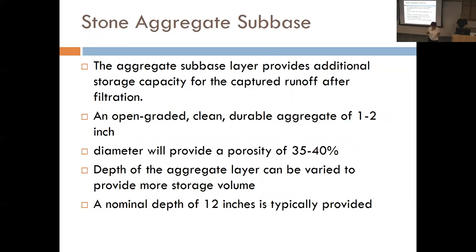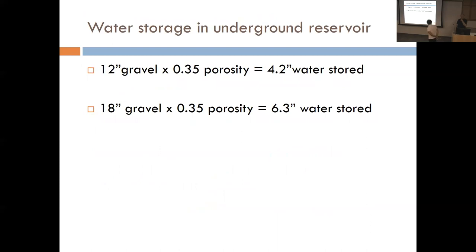The 100-year storm used to be six inches in 24 hours — still quite significant. You can actually store a lot of water in this. A nominal depth of at least 12 inches is recommended, though 24 would be better. You're looking not just for storage but for infiltration eventually. Under the aggregate, you want water to slowly go into the ground, so you get your planting soil, your storage, and then eventually down into the ground.